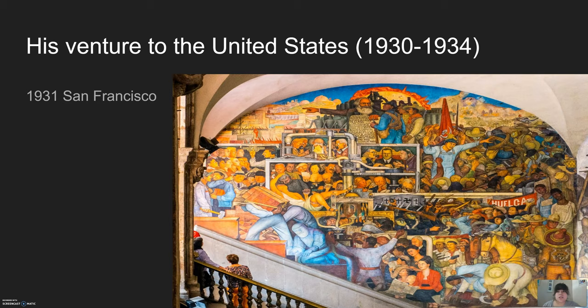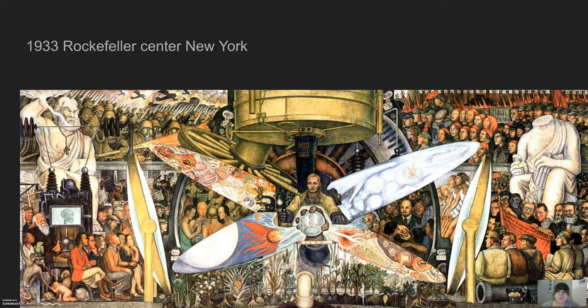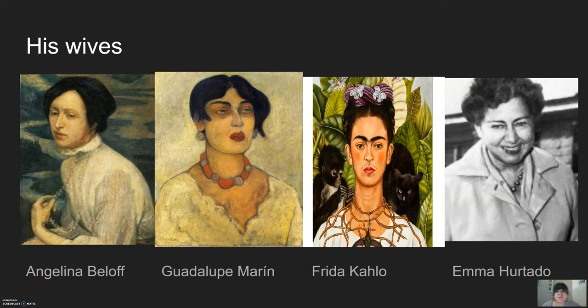When he ventured to the United States, he made many murals. One of them was in 1931 in San Francisco. Another was in 1932 in Detroit at the Institute of the Arts. Then in 1933, he painted at the Rockefeller Center in New York. This painting was later taken down because it was found offensive. A fun fact is that he remade this painting and placed it at the Palace of Fine Arts in Mexico City.